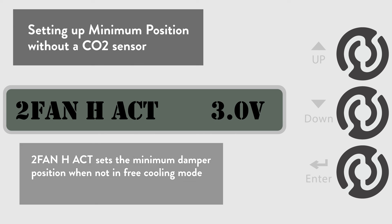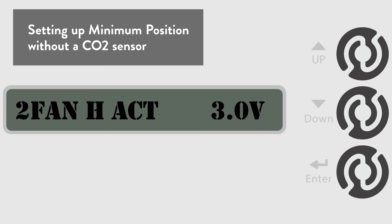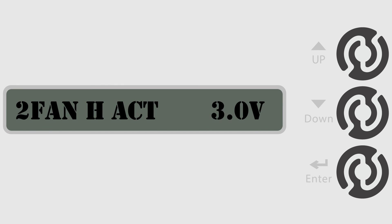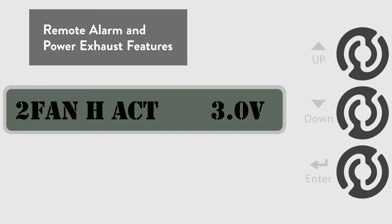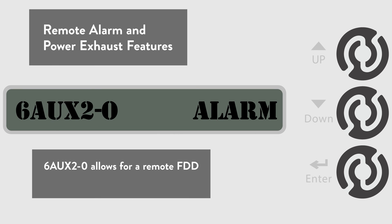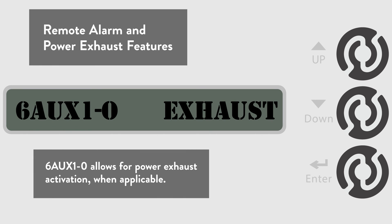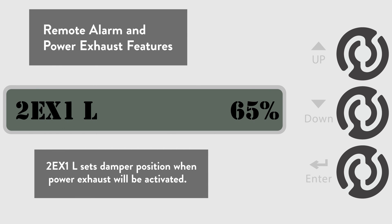The last two items we are going to discuss are for informational purposes: the settings for power exhaust activation and alarms for fault detection. Even if you do not use these features, you can leave the settings at the default. Scroll down to the 6-AUX2-0 menu. The default is set to alarm to allow a signal to be sent to a remote light or thermostat signifying that a fault has been detected on the economizer. The remote alarm feature is required by many building codes, including California's Title 24. Our last example will be the 6-AUX1-0 menu. The default is set for exhaust for use with a power exhaust. To change the activation setpoint, go to the 2-EX1-L menu, where the default is set for the power exhaust to kick on when the outside air damper is open to 65%. But for this example, we are going to change it to 75%.